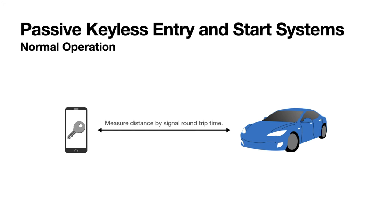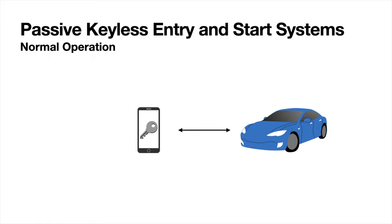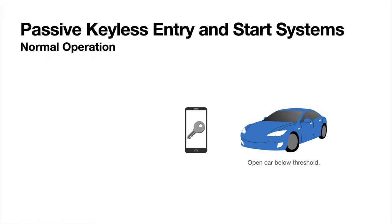One use case is digital car keys. The user carries the key on a smartphone. Instead of unlocking the smartphone and opening an app, everything happens passively. Once the smartphone is in range of the car, the distance is measured, and if the distance is below a threshold, the car opens.